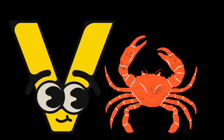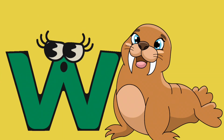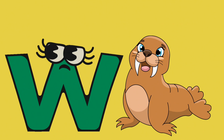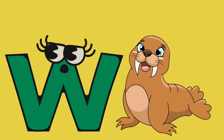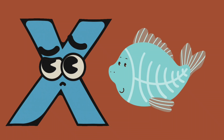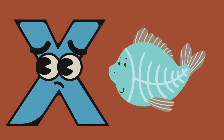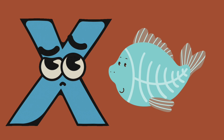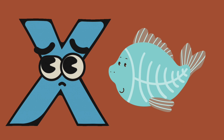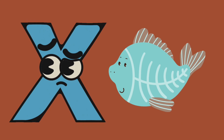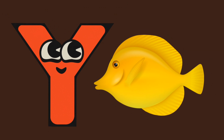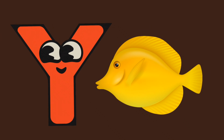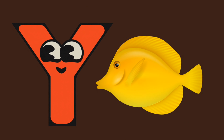T is for Tang fish. T is for Tang fish. T is for Tang fish. U is for urchin. V is for velvet crab.